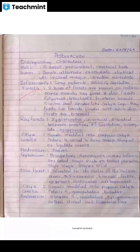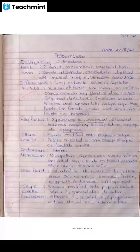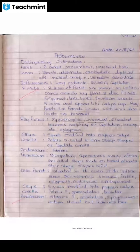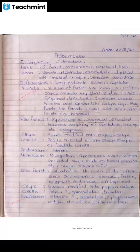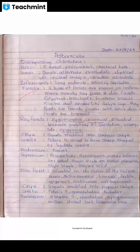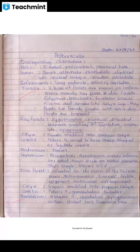Calyx: sepals modified into a pappus calyx (same as in ray florets). Corolla: gamopetalous, tubular. Androecium: 5 stamens, epipetalous. Note — androecium is absent in ray florets. Syngenesious means united by the anther — having stamens united so that the anthers are united but filaments are free.